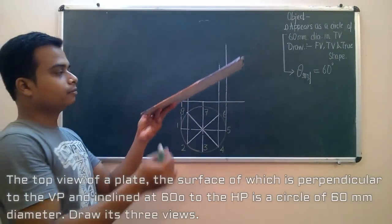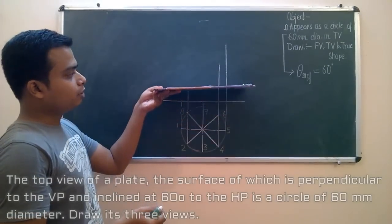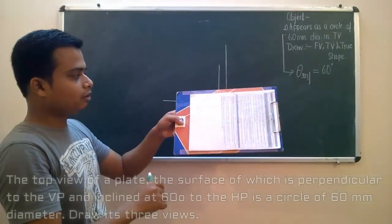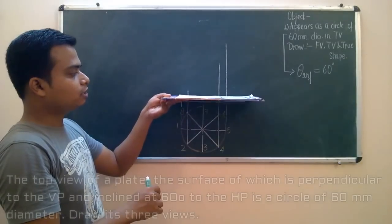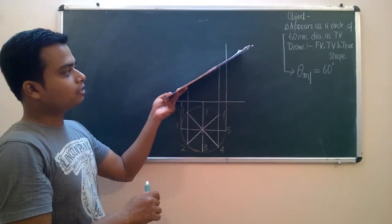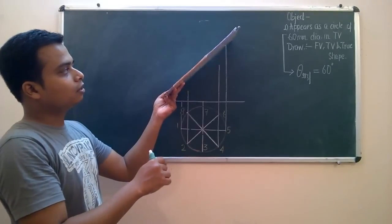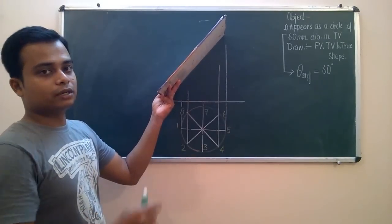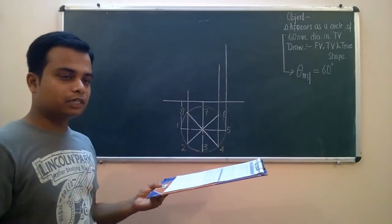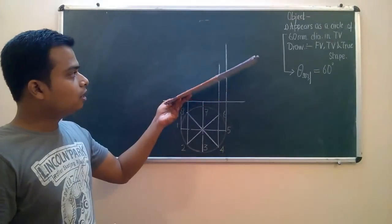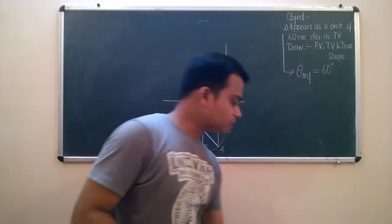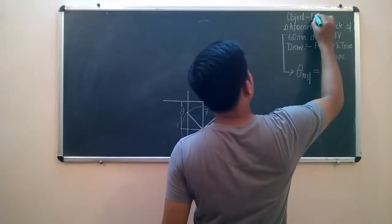This is a plane surface, and this plane surface is absolutely perpendicular to the vertical plane. Suppose this is a rectangular plane — initially it is parallel to the horizontal plane. If I keep on increasing this angle, a time will come when this rectangle would look like a square. Similarly, there is a certain object which on increasing this angle looks like a circle at a certain angle.